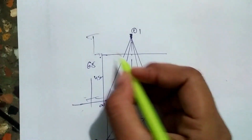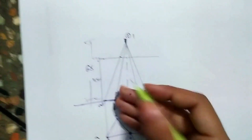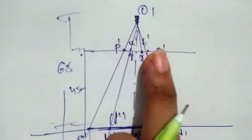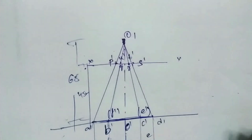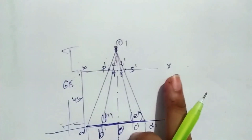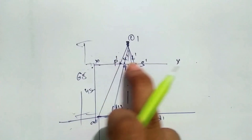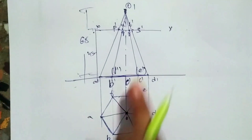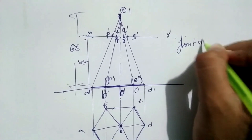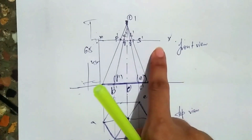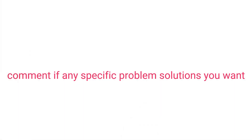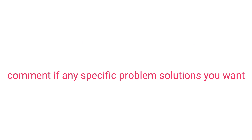Each and every one of the six sides — we have to use the front view and back part. PQRS is the front view. UT is the front view. Now, let's take a look at the sectional top view. We are going to cut the sectional top view.